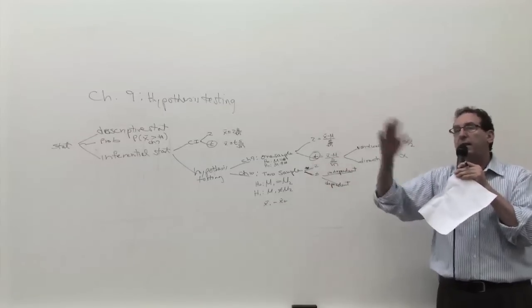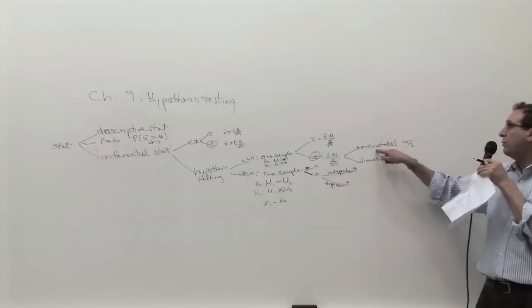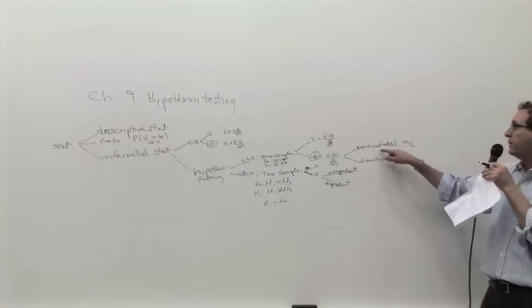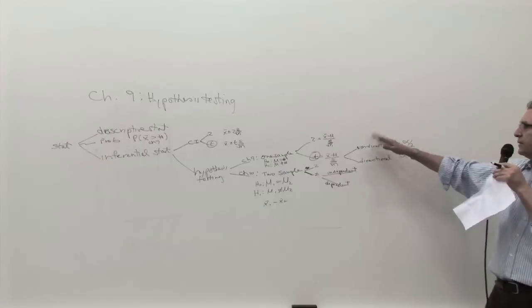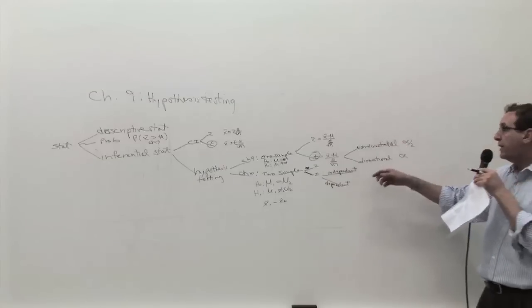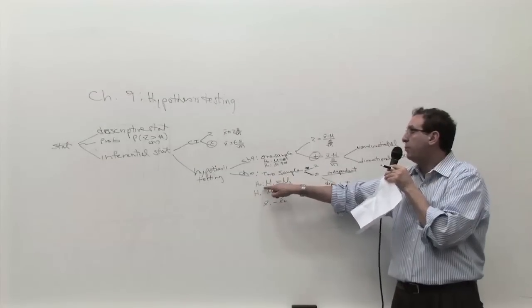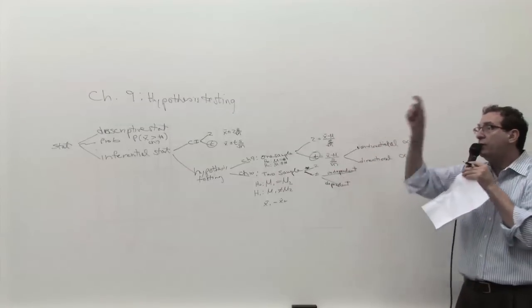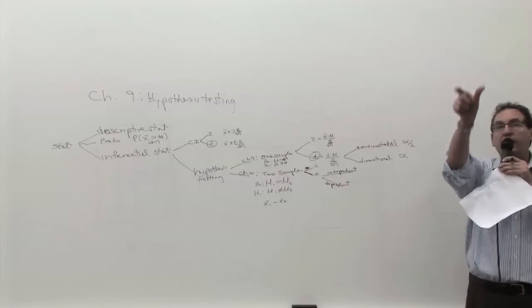But then you do have to worry about is there a direction in the problem? Does it say more than, less than, greater than, exceeds at most? Is there a direction? Or, like we had until this point, simply is one number different than another number, non-directional? So that's something you have to think about by reading the paragraph. And assuming you recognize that we're talking about chapter 10 type problem of two sample, again, you're going to have to make one more distinction. Are these two sets of numbers sort of lined up together?